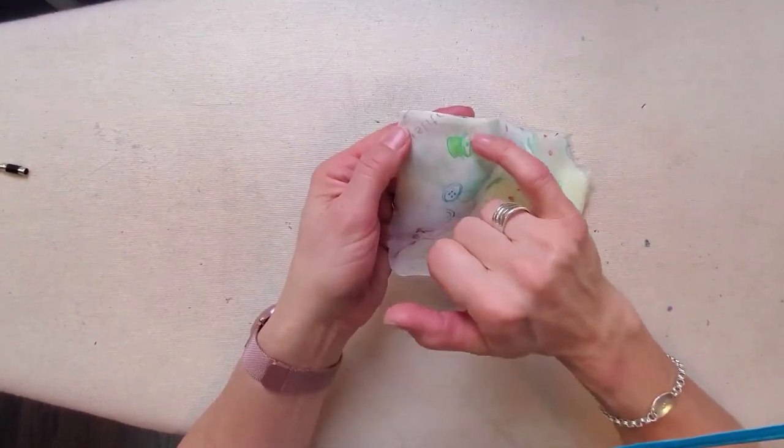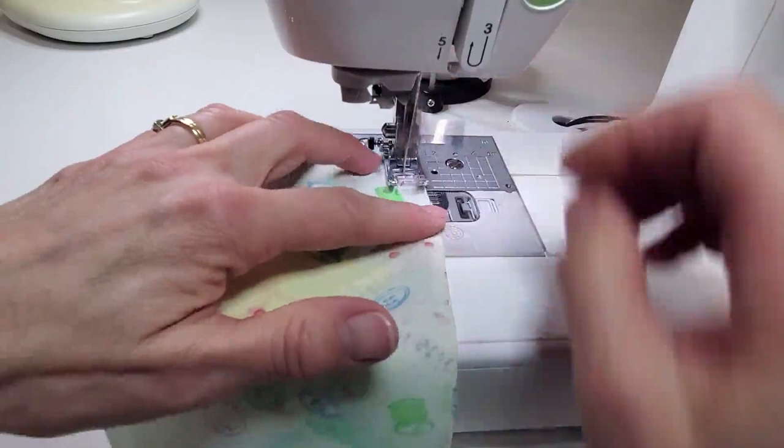I'll sew again at a quarter inch so that I'm enclosing that seam allowance within that second seam.